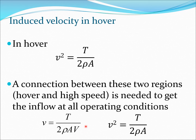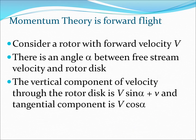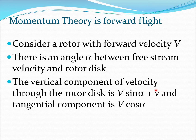What we are going to do is find an expression valid in the regime between these two extreme flight conditions, using momentum theory. These two expressions will be useful to check the general expression in the extreme scenarios. Consider a rotor with forward velocity V, and also presume that an angle is present between the free stream velocity and the rotor disc — this is generally the case because the rotor is tilted. The vertical component of this velocity through the rotor disc is the induced velocity v, and there is also a tangential component given by V cos(α).